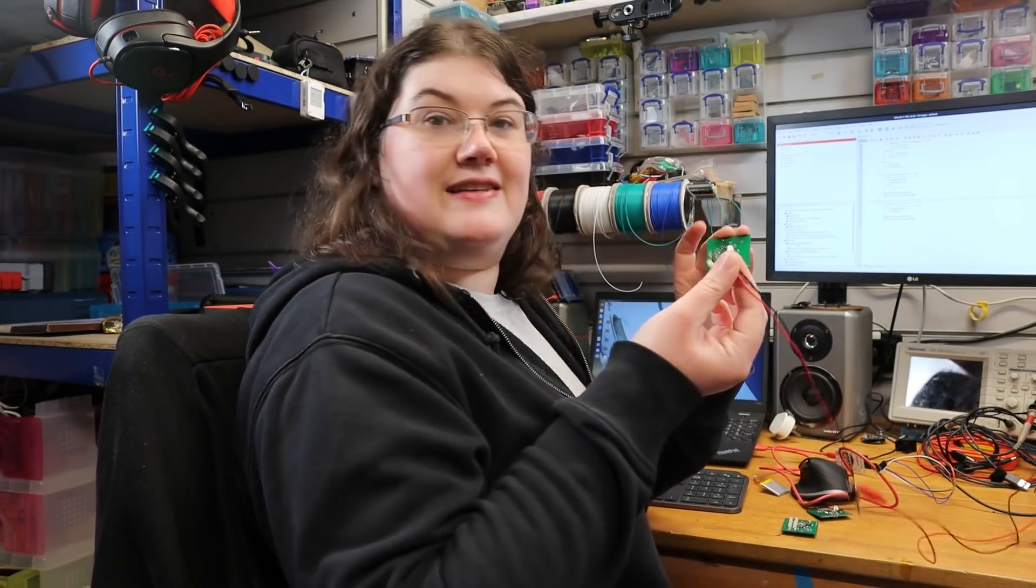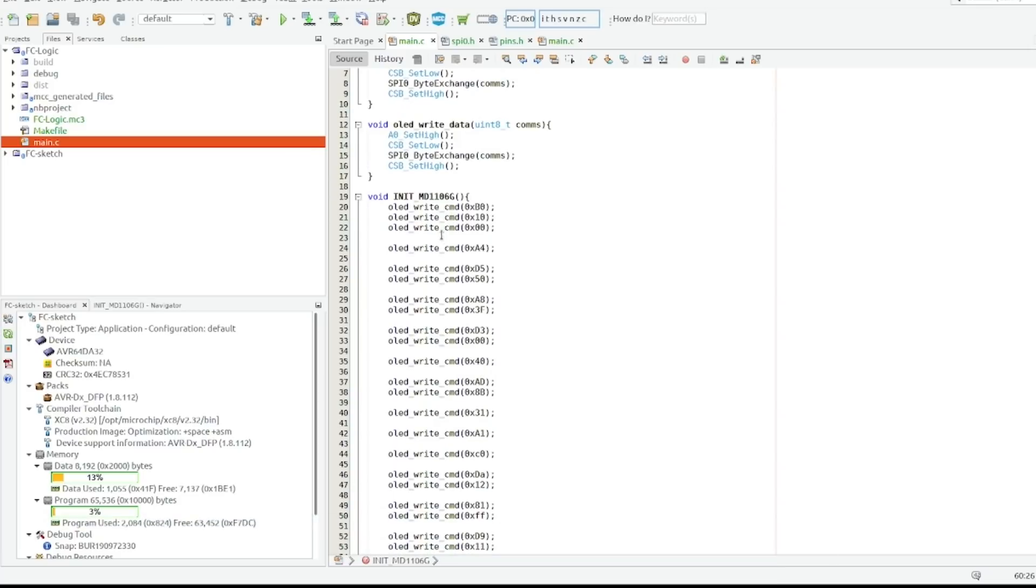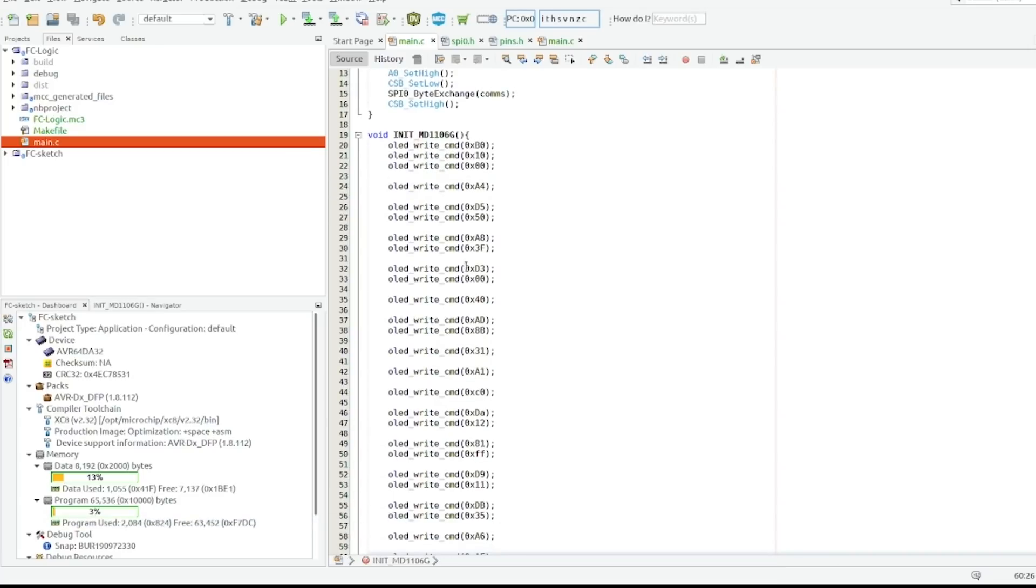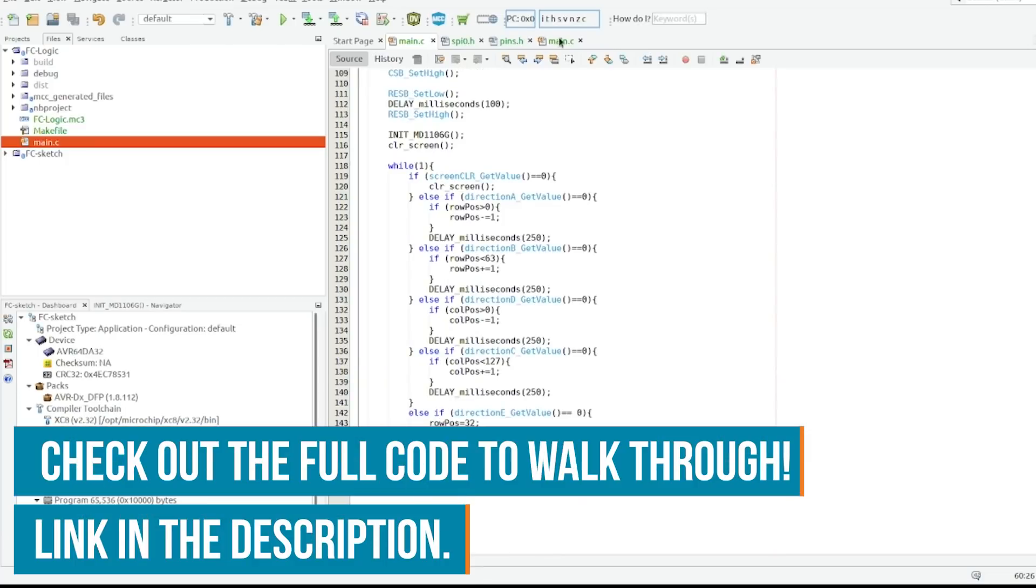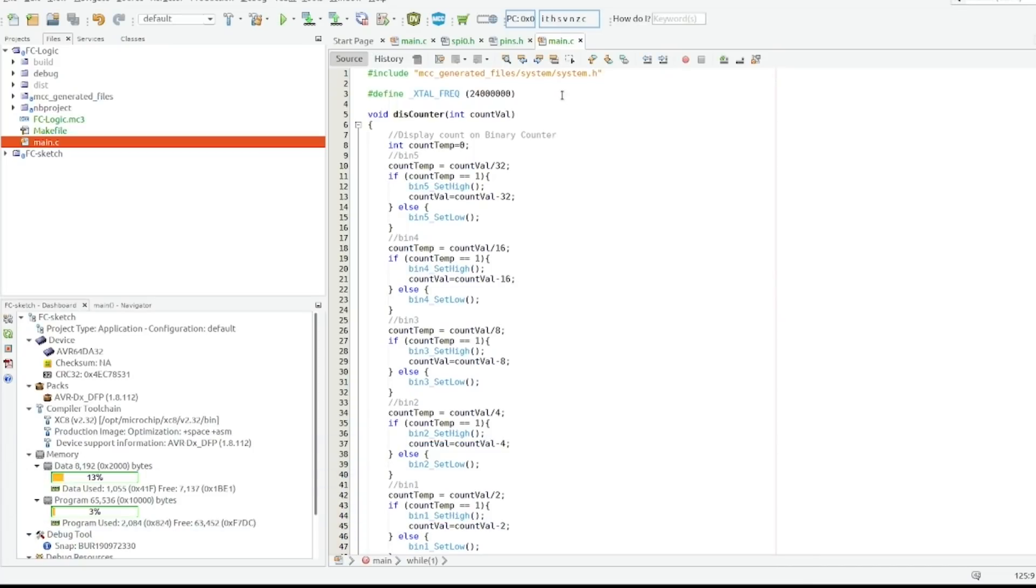For the logic board I'm setting up functions for writing commands to the screen and writing data and an initialization. These are all the commands the screen needs to set it up ready to display. And then I've also got a separate code to run on the logic calculator PCB.